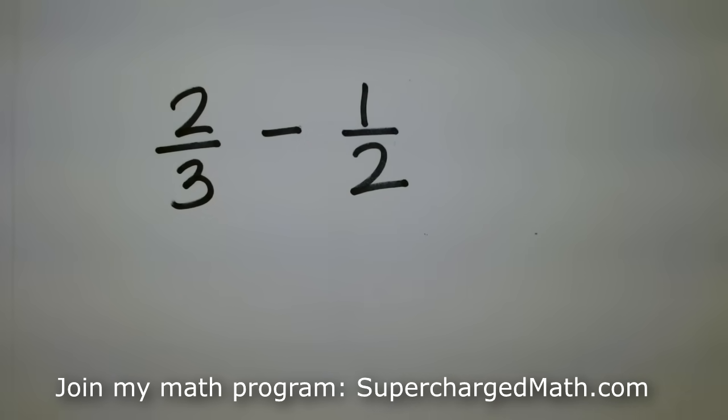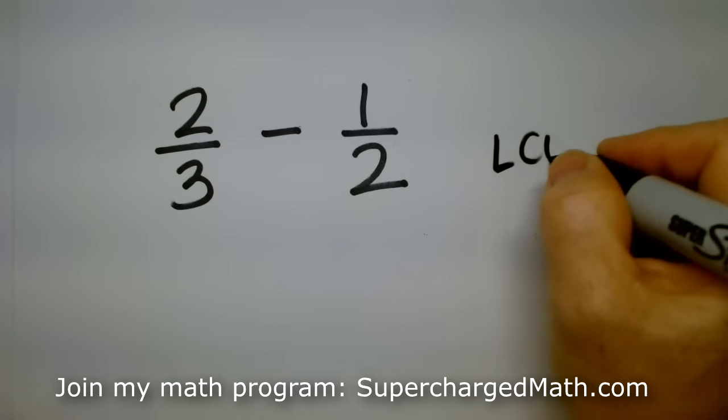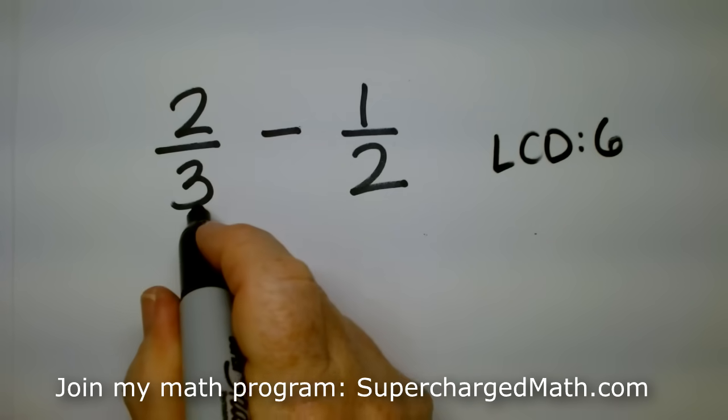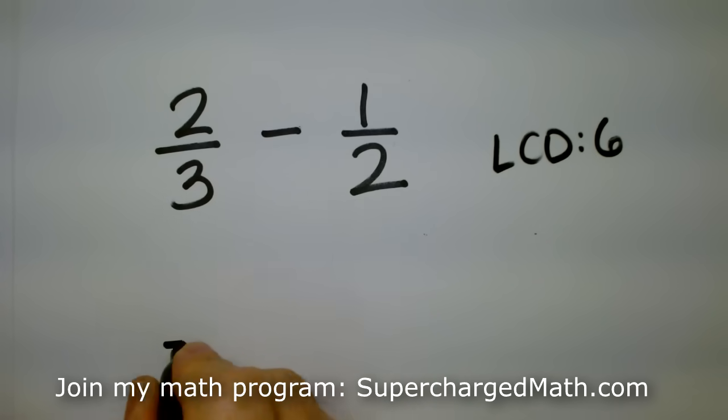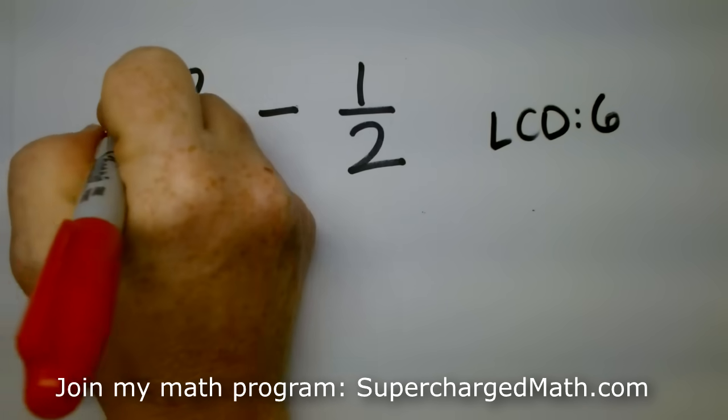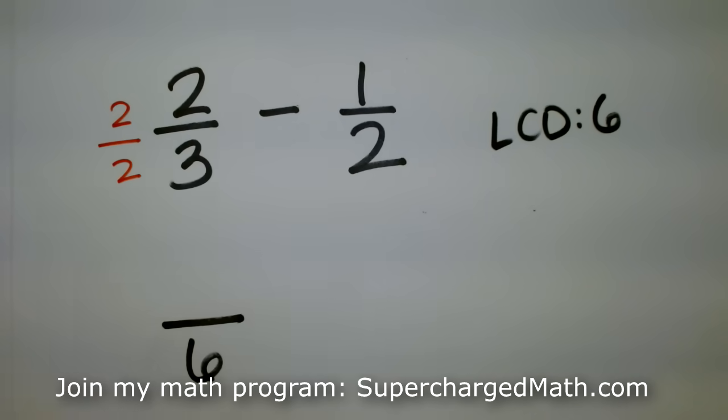So what's a number that they both go into? Did you figure that out yet? Yeah. So I would say the least common denominator is six. So how did three go from three to six using multiplication? What did I have to do to it? What did I have to do to three? Yeah. I have to multiply by two over two.